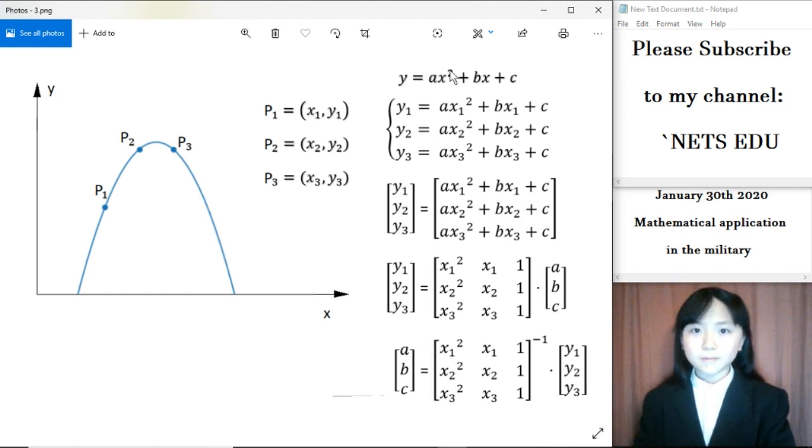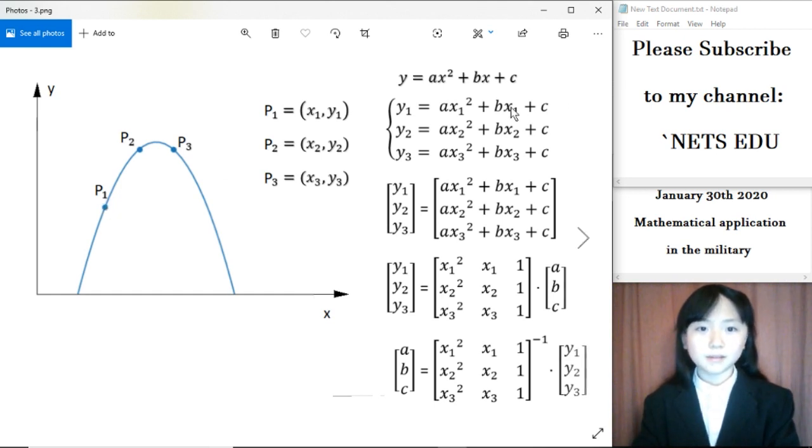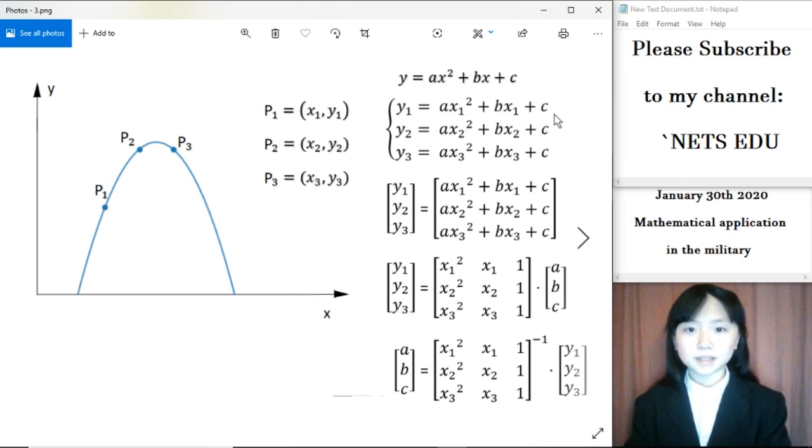We know the function of a parabola is y = ax² + bx + c. And we have these three points. So for the y coordinate of this point, we have y₁ = ax₁² (x₁ is the x coordinate for this point) + bx₁ + c. Same for point 2: y₂ = ax₂² + bx₂ + c.